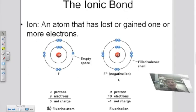If we look at fluorine, it too wants to be like a noble. In order to become like a noble, it's going to take on one electron, giving it a full outer shell. So if it takes on one more electron, it's going to have a negative one charge — a negative ion, or an anion — with a full outer shell.